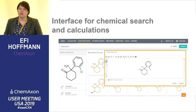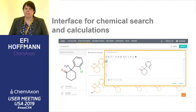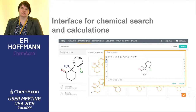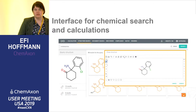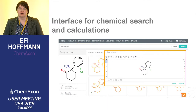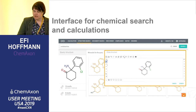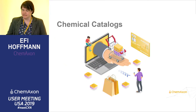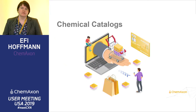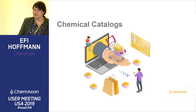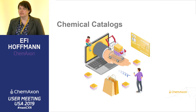So where can you use MarvinJS? A major use case is as an interface for chemical search or chemical calculation — for example, in our Chemicalize product. A special use case for chemical search is chemical catalog applications. MarvinJS is used in several catalogs like Wuxi, Malport, and Enamine, among others.